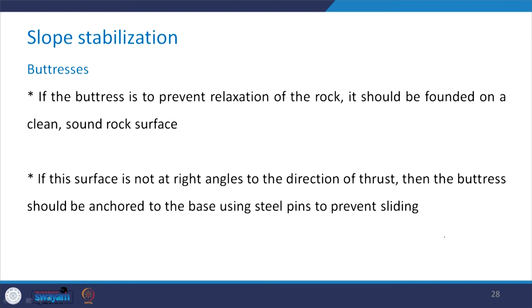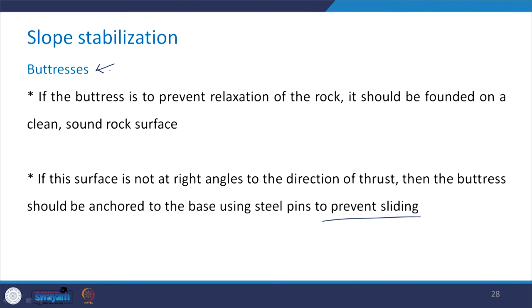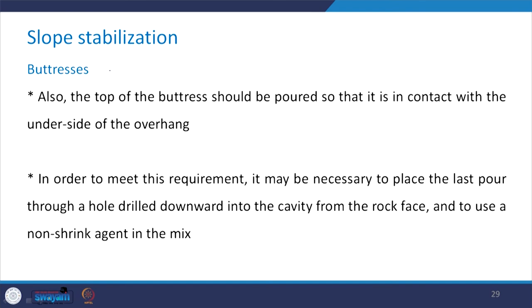If the buttress is to prevent relaxation of the rock, it should be founded on a clean, sound rock surface. If this surface is not at the right angle to the direction of the thrust, the buttress should be anchored to the base using steel pins in order to prevent sliding. These conditions should be kept in mind when designing slope stabilization measures that include the provision of buttresses. Also, at the top of the buttresses, concrete should be poured so that it is in contact with the underside of the overhang.